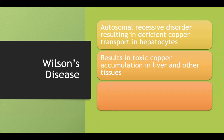If we have deficient copper transport, the copper will end up accumulating in our liver, cause damage, and it'll be released into the bloodstream and also affect other tissues.